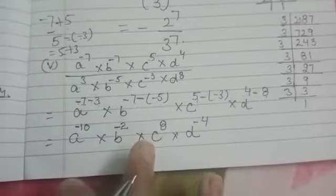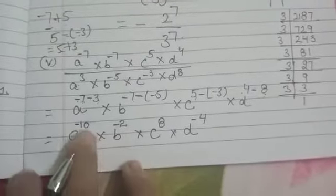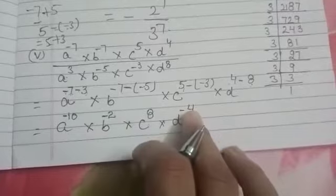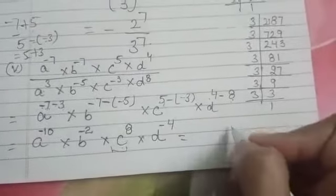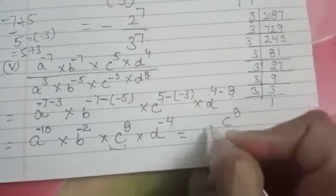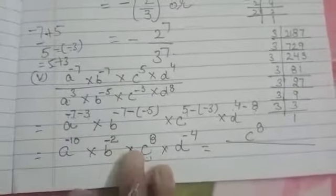This is not in positive exponent form. You will write it c^8 and take all the other numbers to the denominator, because I have already told you: when the power is negative, we need to make it positive.